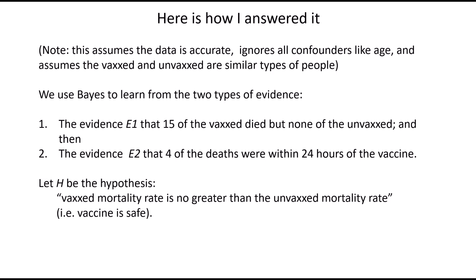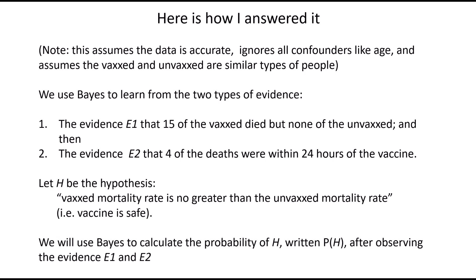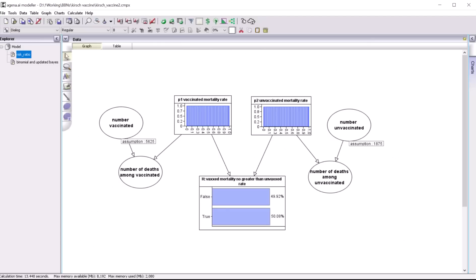We're going to test hypothesis H, which is that the vaccinated mortality rate is no greater than the unvaccinated mortality rate — that's the 'vaccine is safe' hypothesis. We're going to use Bayes to calculate the probability of H after observing the two types of evidence. All calculations based on the assumptions I'll show can be done manually, but I'm going to do them using our Bayesian network software.